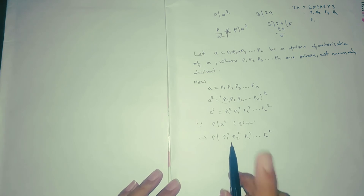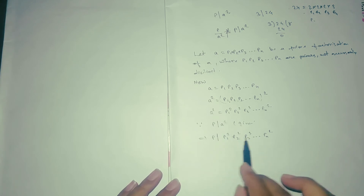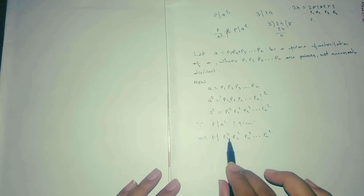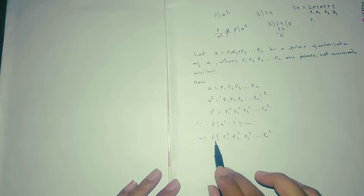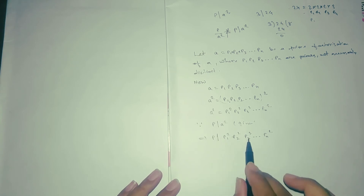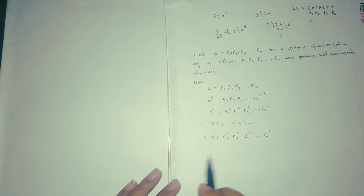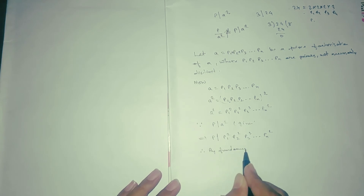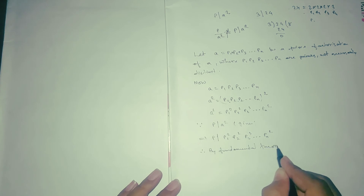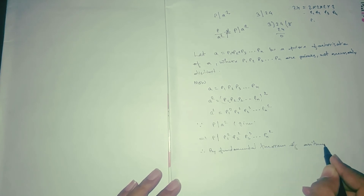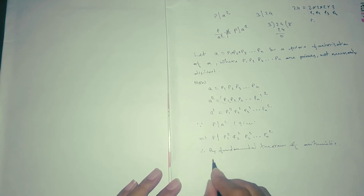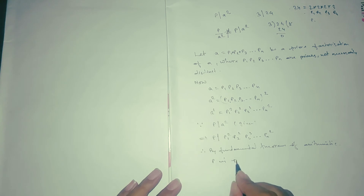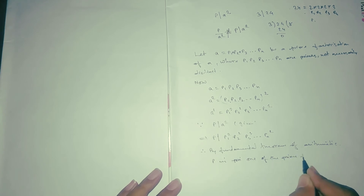Then by the Fundamental Theorem of Arithmetic — specifically the uniqueness part — a squared can be represented only in this form. So this prime p must be one of p1, p2, p3, ..., pn. Therefore, by the Fundamental Theorem of Arithmetic, p is one of the prime factors p1, p2, ..., pn.